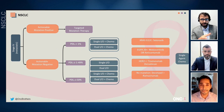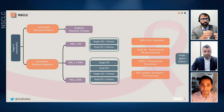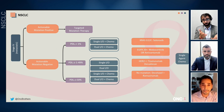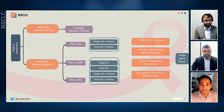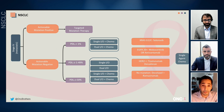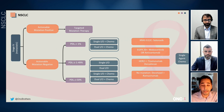Coming back to the algorithm, is there a particular patient where you would consider dual IO checkpoint inhibitor with or without chemotherapy when single immunotherapy with chemotherapy is also approved? And does TMB play a role? For patients with high PD-L1 expression — 50% or greater — I'm less inclined to give dual immunotherapy, because we know from trials that these patients are more likely to have immune-related adverse events compared to single-agent monotherapy. So I'm more inclined to give single-agent monotherapy with immunotherapy for that specific subset.